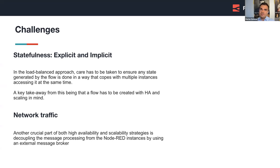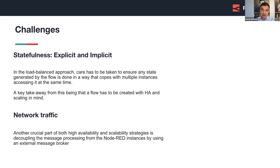On the other hand, we have implicit state — data that is internally maintained by the nodes within a flow, even though the developer has not explicitly programmed it. For instance, nodes such as the smooth node or batch node maintain an internal state to perform their specific operations. The hot spare approach simplifies explicit state handling as only one instance is active and the other is passive, but the implicit state remains tied to the individual Node-RED instance. The key takeaway is that the flow, even for the hot spare approach, must be built with high availability and scalability in mind.